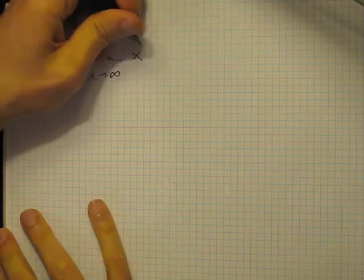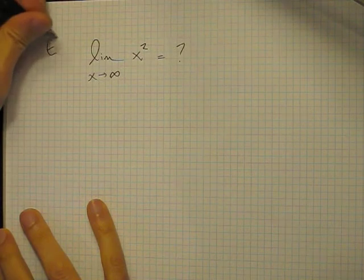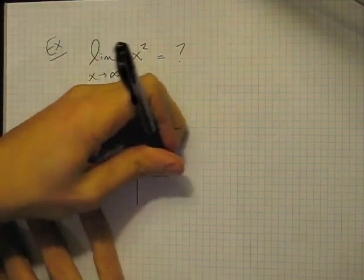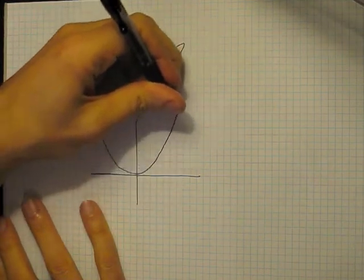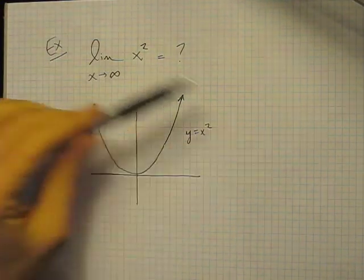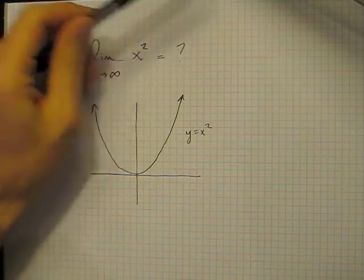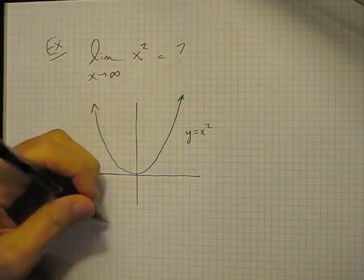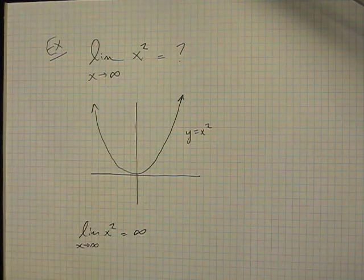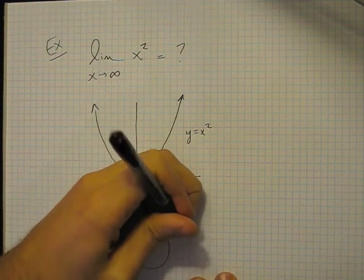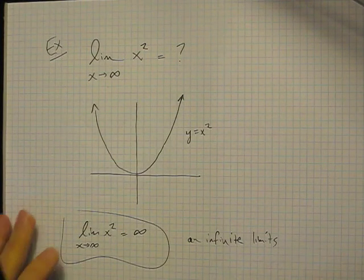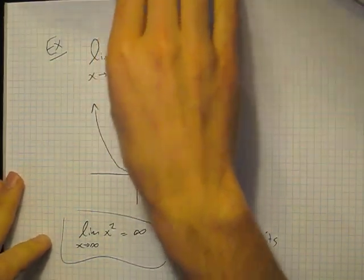We can also have infinite limits. Let's analyze this example: the limit as x goes to infinity of x squared. Here's the graph of x squared. As we let x go forward in the positive direction, the graph of this function climbs without any sort of bound. And so we express that by saying that the limit of x squared as x goes to infinity is equal to infinity. So that's an infinite limit. We've encountered infinite limits in the previous discussion we've had on limits. That's all for this section.